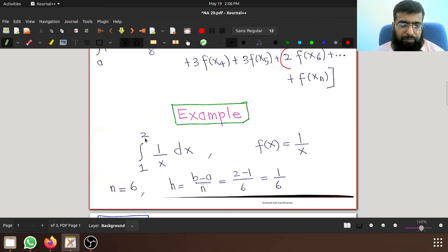This is a definite integral with a equal to 1 and b equal to 2. So we have to compute and we are supposed to apply these two rules for n equal to 6. So h is b minus a over n, 2 minus 1 over 6.